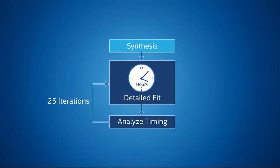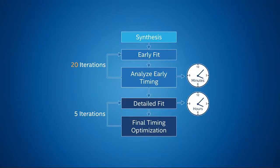Let's run this through an example. Consider a large, high-performance design that can take up to 25 iterations for timing closure. Each iteration can take five hours in runtime for a million logic element design. You can use early placement to reduce the cumulative runtime. 25 iterations of early place can take an hour each. You will likely still need to run a few more iterations — maybe five more — of detailed placement and route. But the overall savings for your project can be significant. In this example, about 64% savings in runtime.